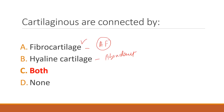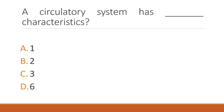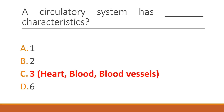The three main components of the cardiovascular system are the heart (pumping organ), blood (fluid), and blood vessels, which are of three types: arteries, veins, and capillaries.